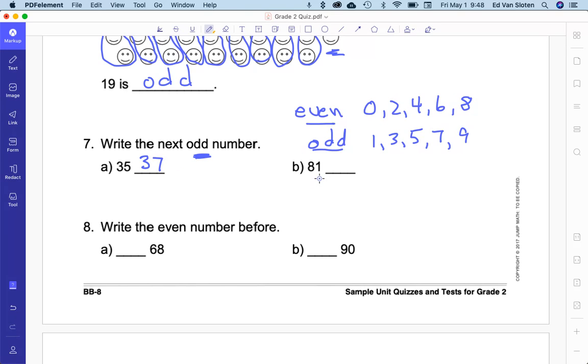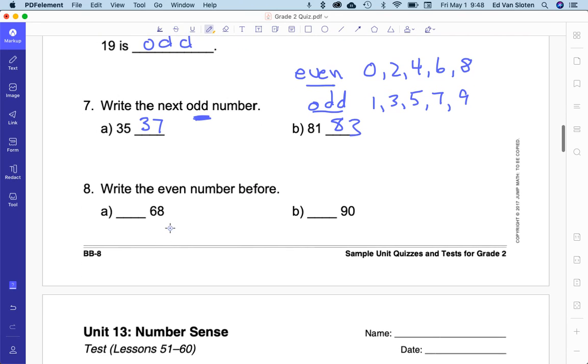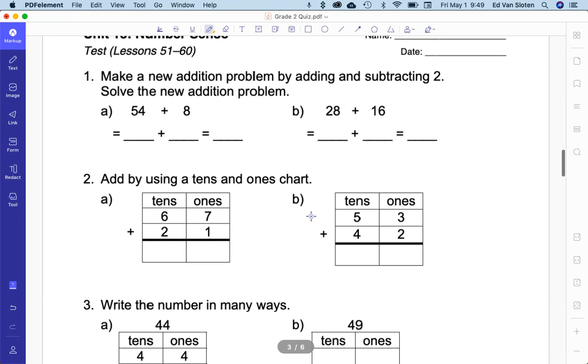Write the next odd number. Well, be careful. Don't just go 36 because 36 is an even number. The next odd number is 37. The next odd number after 81 is going to be 83. Write the even number before. You have to be careful again. You can't just write 67 because it's before - 67 is odd. It wants an even number, so we've got to go to 66. And the even number before 90 - 89 is odd, 88 is even.